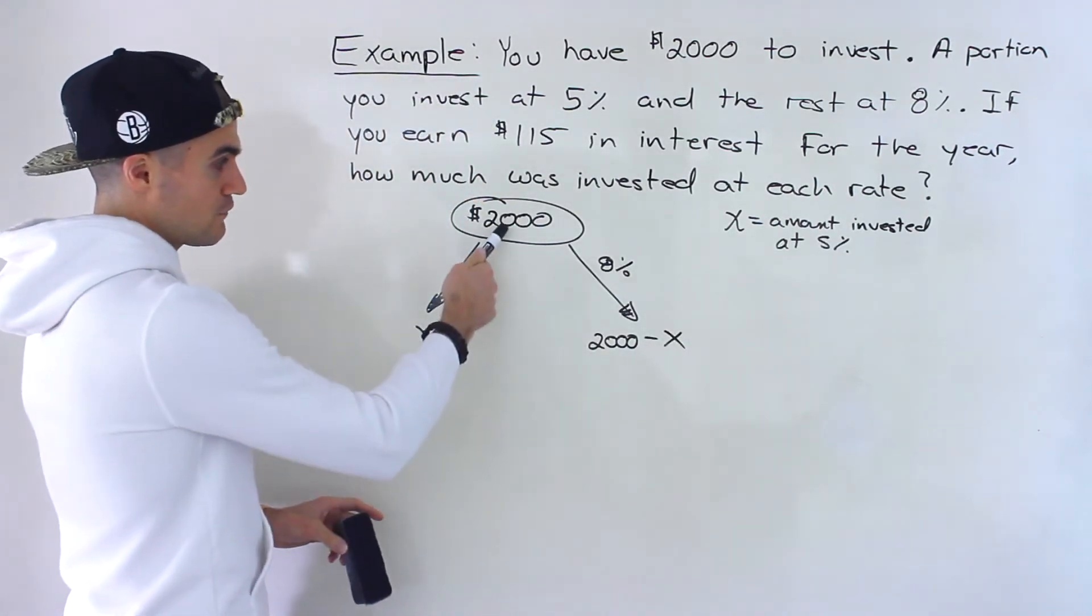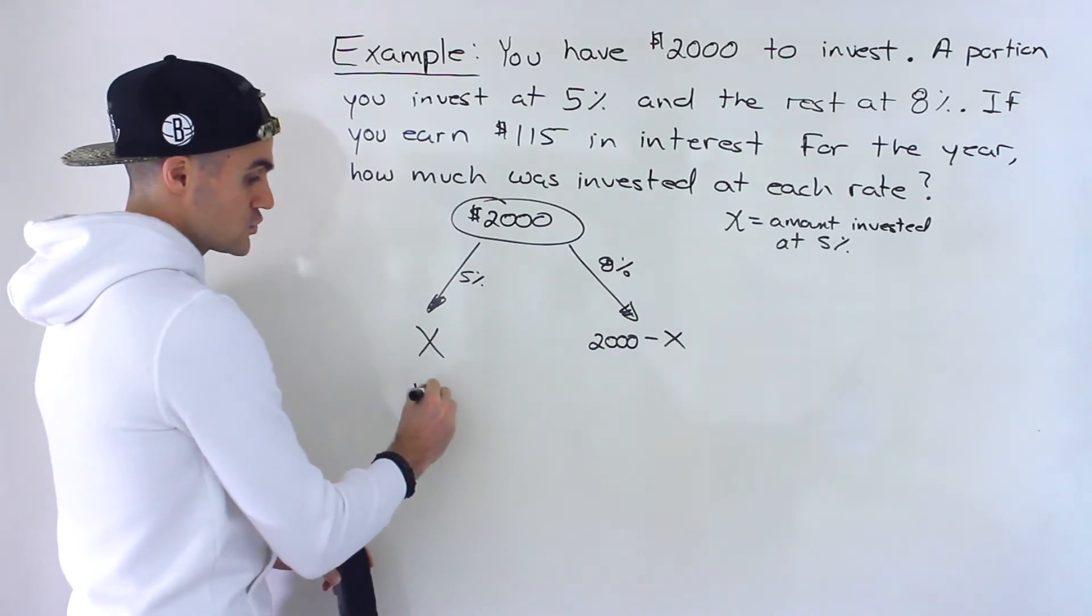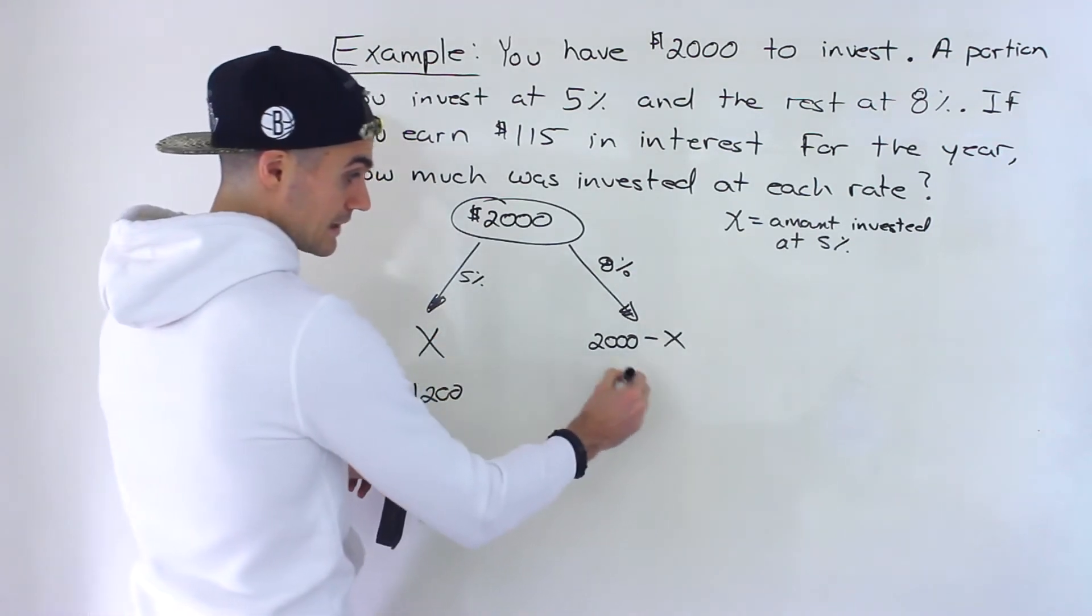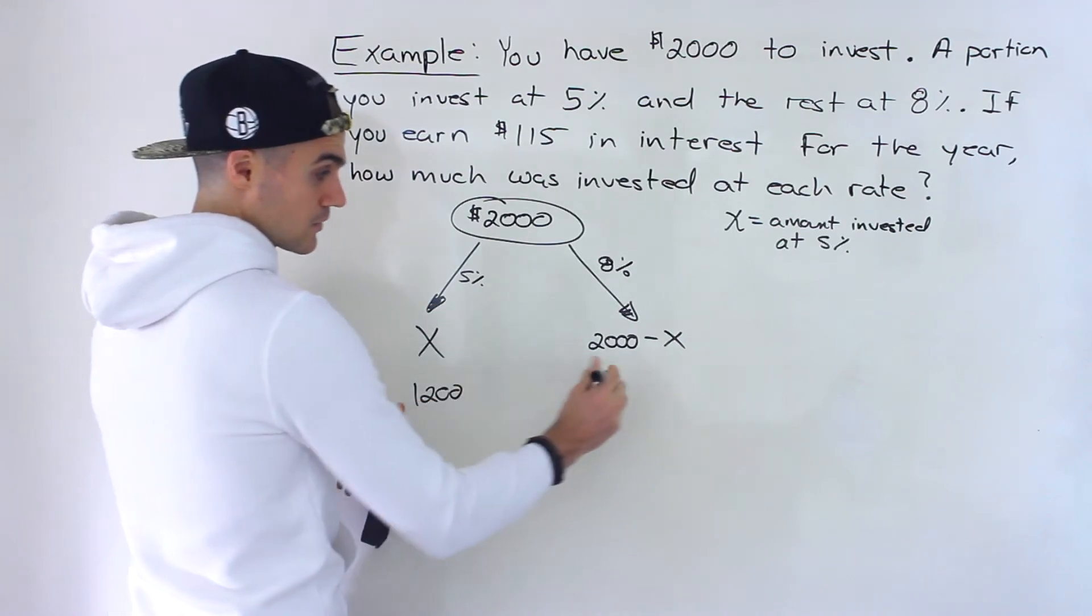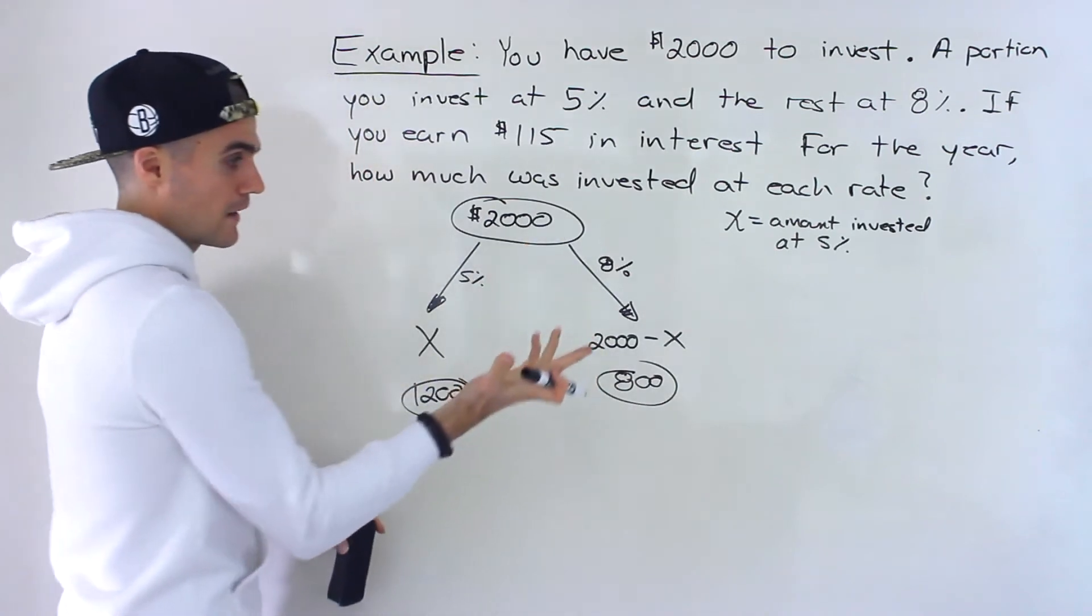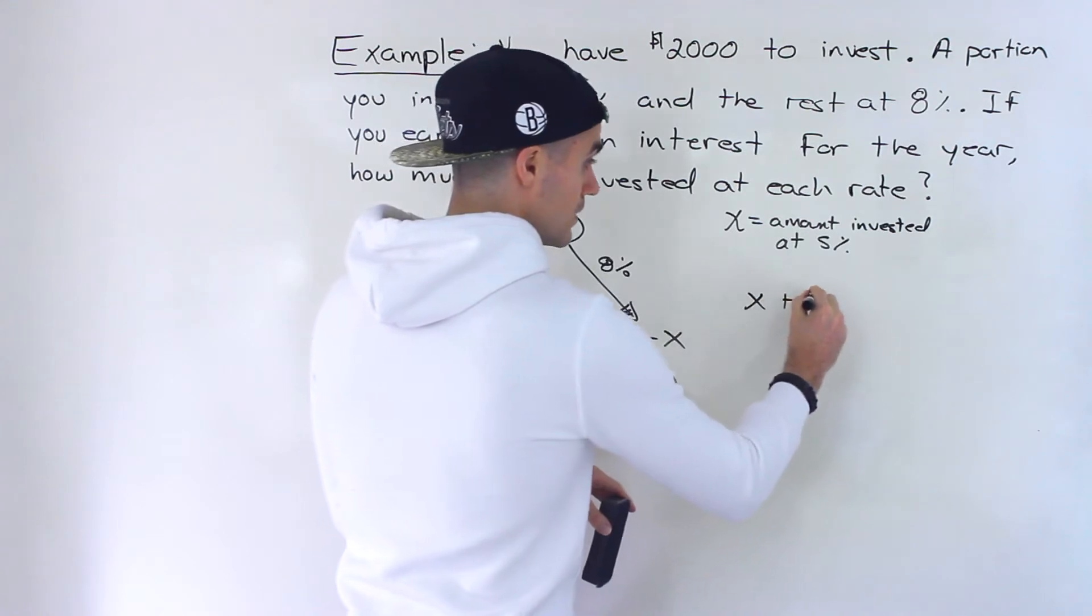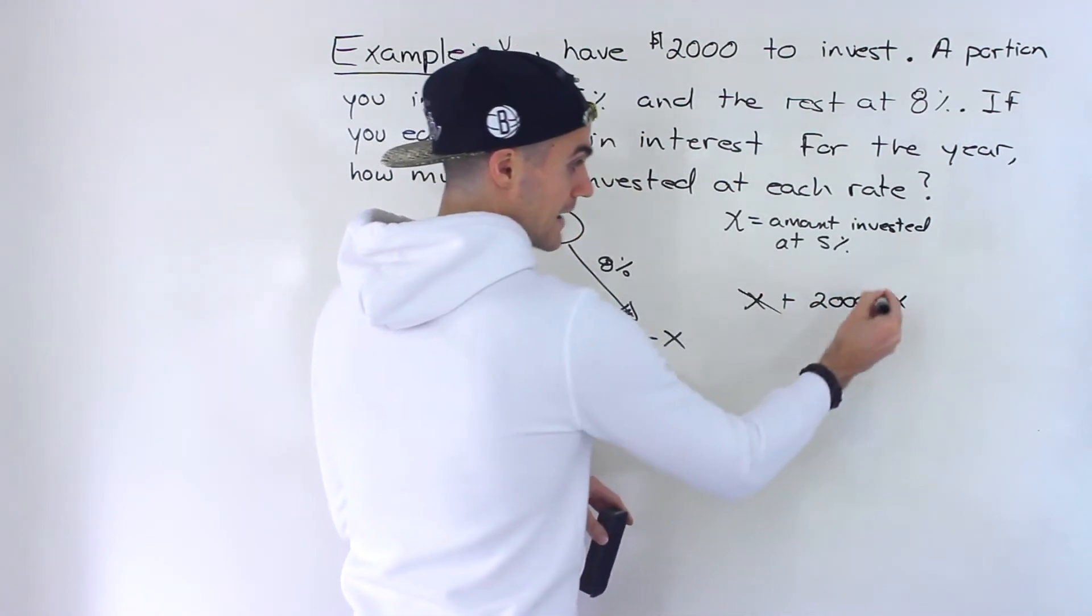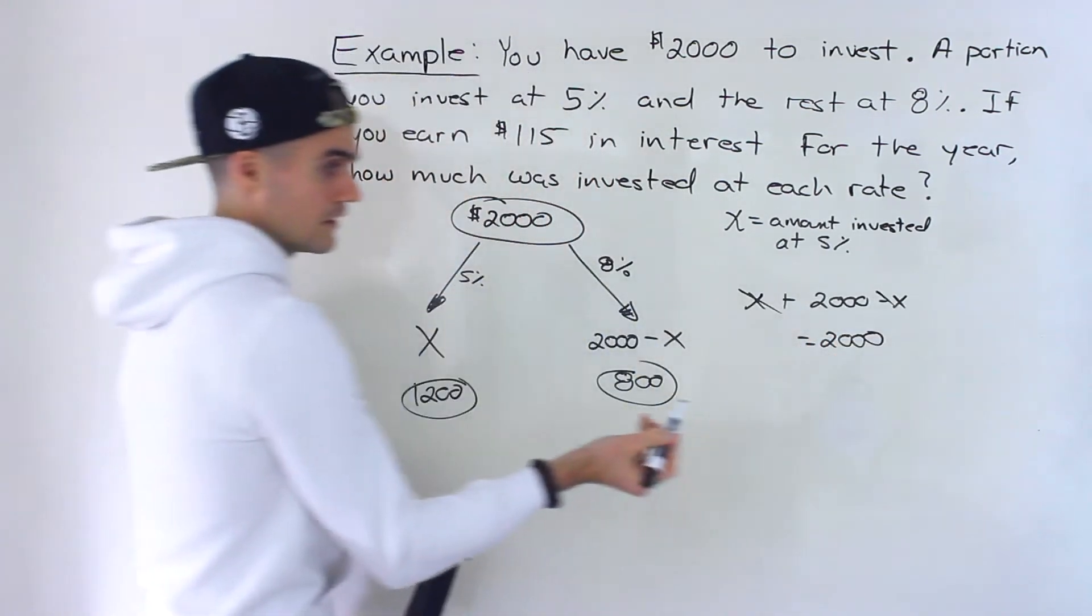So for example, if from the $2,000, we invest $1,200 at 5%, well, that means what's left to invest is $2,000 minus the $1,200, which would be $800. The sum of these is the total amount that we're investing. And you could tell if you add these up, if we take X plus $2,000 minus X, well, notice the X's are just going to cancel out, and we're going to end up with that $2,000 in total.